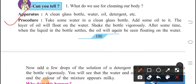Here a small activity is there. What is this activity? We will go ahead with the activity. A clean glass bottle, water, oil, detergent etc. Procedure is, take some water in a clean glass bottle. Add some oil to it. The layer of oil will float on water. Shake the bottle vigorously. After some time, when the liquid in the bottle settles, the oil will again be seen floating on the water. You can do this activity at home also. Take a water and oil, mix it and keep aside for some time. So, you can observe that oil and water get separated out.